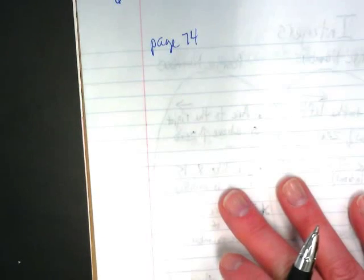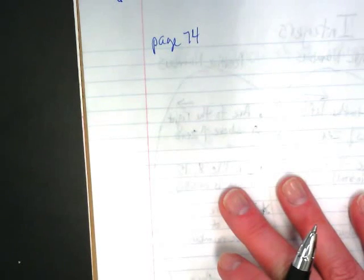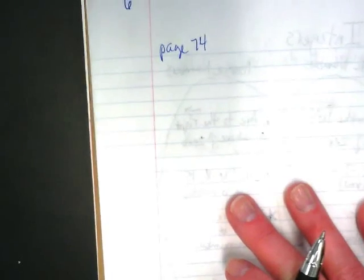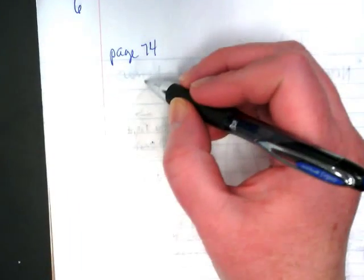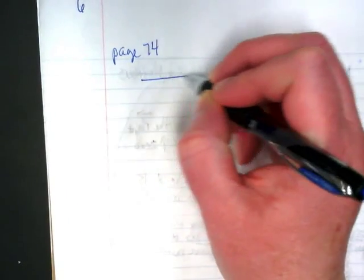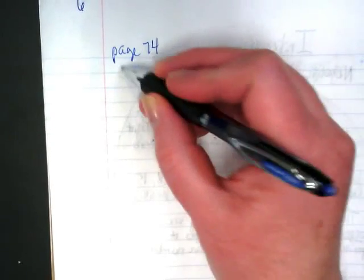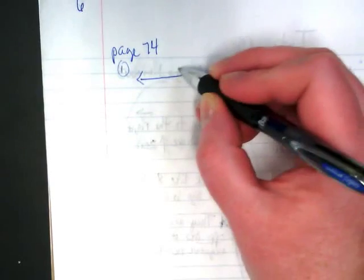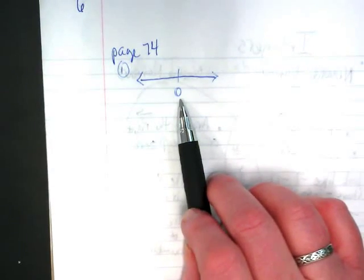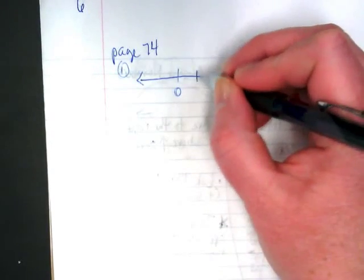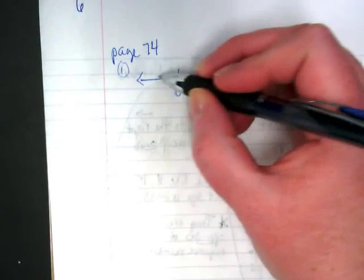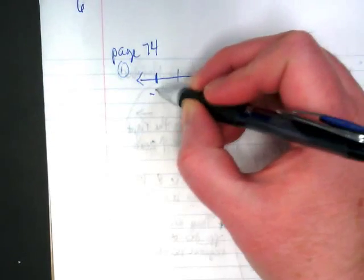We're on page 74 in the book. Look at what number one says. It says graph each integer and its opposite on a number line. If the integer we're graphing is number two, we're going to start with zero in the middle. Two would be here, and negative two would be the same distance away from zero.